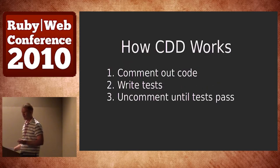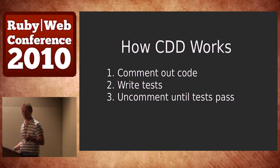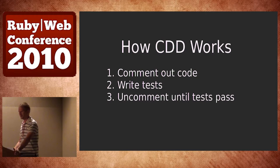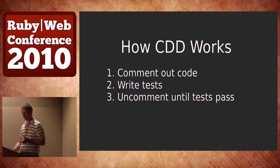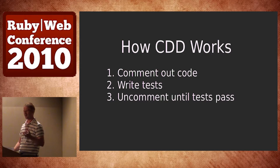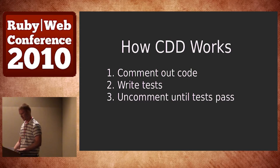A basic summary of how CDD works is: you take whatever code you think needs testing and you comment it all out. Then you write your tests while your code is still commented. Then you uncomment your code until your tests pass. That kind of seems maybe a little bit silly or simplistic, but that's the idea — to make it easy. This is one way that I learned to do it the right way, and if you're someone that doesn't test all the time or has no tests at all, this is a great way to get into it.